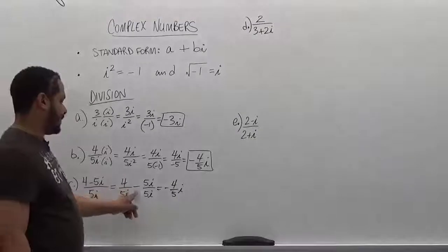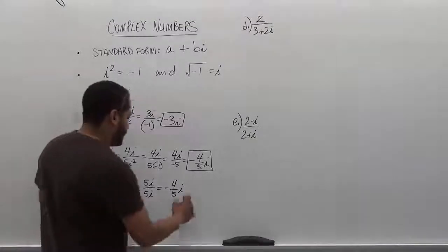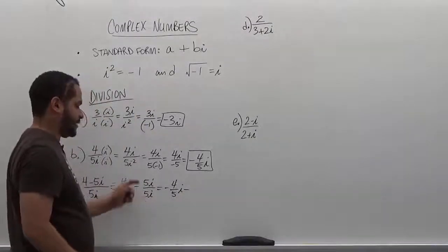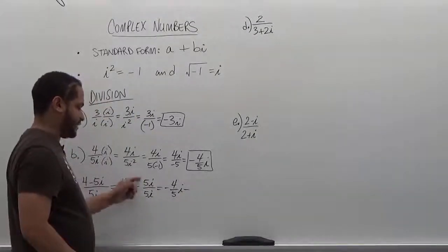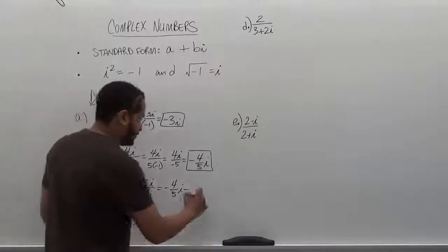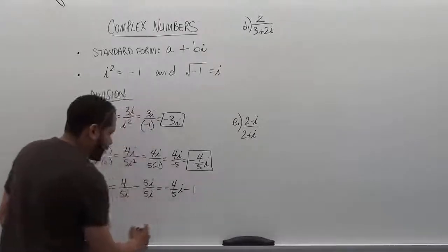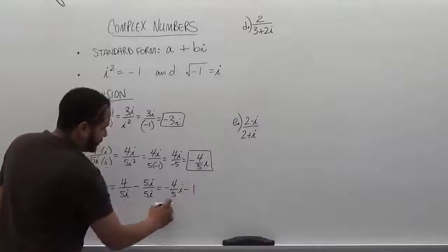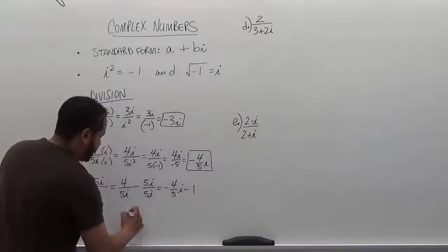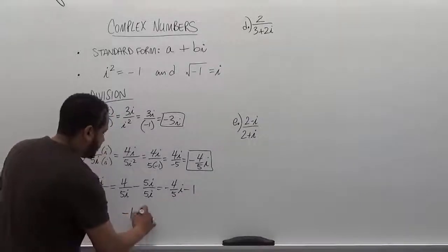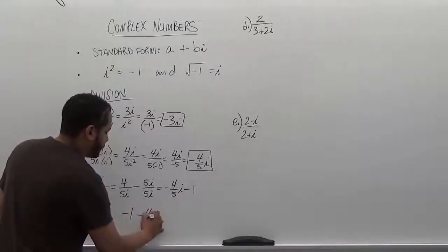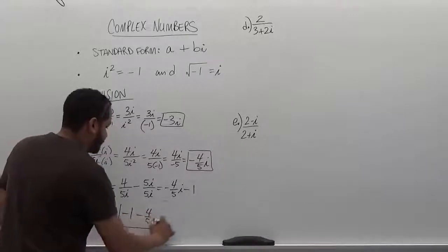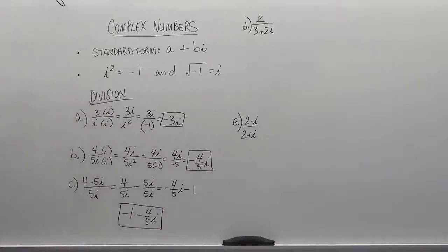For the second part, 5i divided by 5i are identical terms, which produces 1. So combining, we have negative 1 minus 4 over 5 i. This is our solution in standard form.